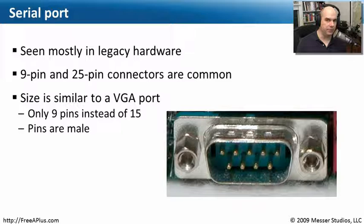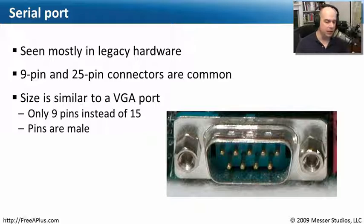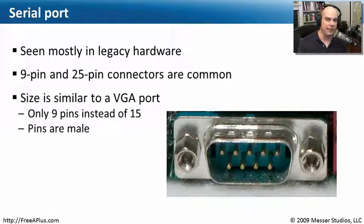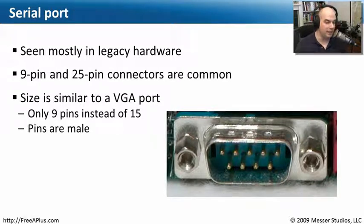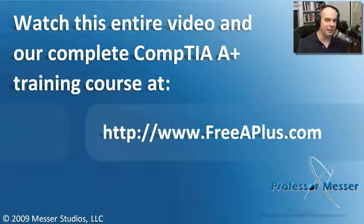Before there was USB, there was just the serial port — it was universal in its own way; we just didn't know it at the time. We really only see this on legacy hardware now, and it's hard to find on new computers or laptops. Usually we're buying a USB adapter to give us this nine-pin serial interface. This is a DE9 serial connection. There are also 25-pin DB25 serial port connectors on really legacy products, though you rarely see those anymore. Notice the DE9 is exactly the same physical size as a VGA port, but with only nine pins — and on the back of a computer, the VGA DE15 is female while the serial is male, so you should be able to tell them apart instantly.